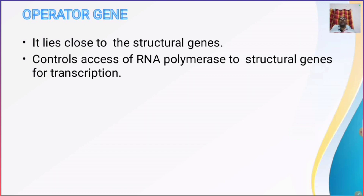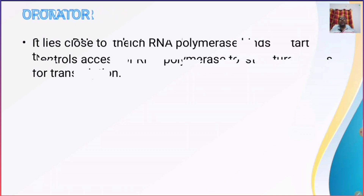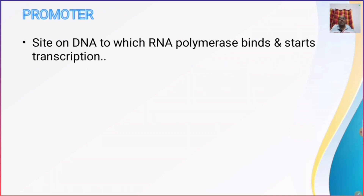The operator gene controls access of RNA polymerase to the structural genes for transcription — it is actually giving access of RNA polymerase to the structural genes. The promoter gene is the site on the DNA to which RNA polymerase binds and starts the process of transcription.